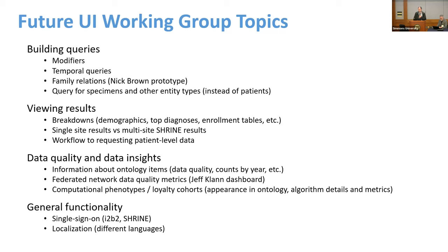There are a number of things we can do in the UI related to data quality and data insights — information about ontology items. Each item in the ontology has all sorts of data about when it started getting used at your institution, what the counts by year are, whether it's inaccurate, whether there's a phenotype associated with it. We could provide that information in the ontology, but if there's no way of displaying it in the UI, how would users get to it? There are also federated network data quality metrics such as Jeff Klein's dashboard developed for ENACT. For computational phenotypes and loyalty cohorts, there are graphs illustrating data metrics — recall, precision, how it's changed over time — and all these can be bubbled up as visualizations put into the UI.